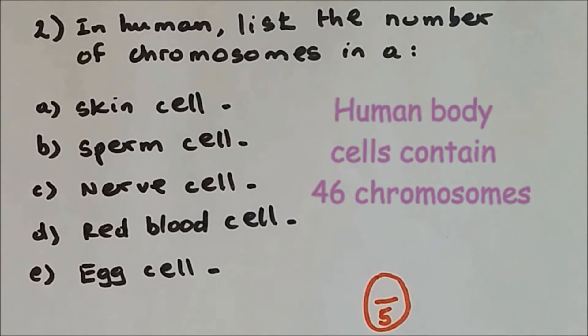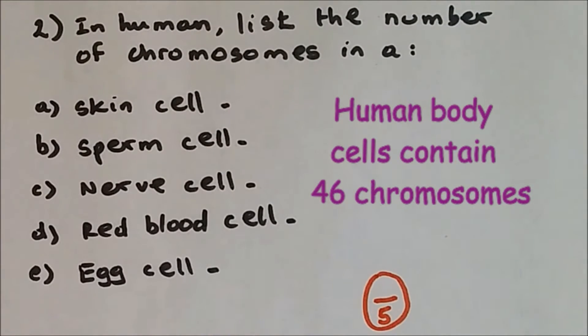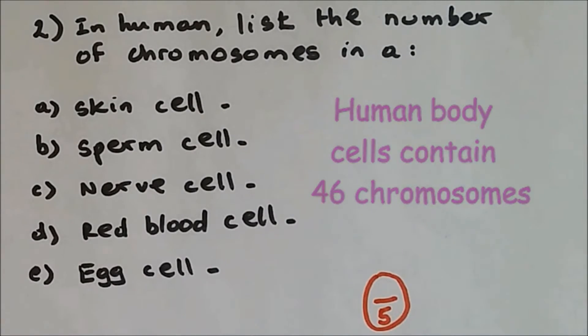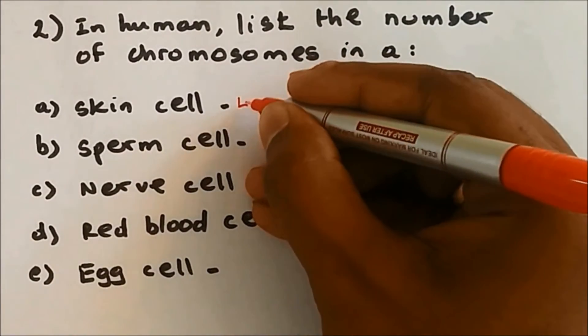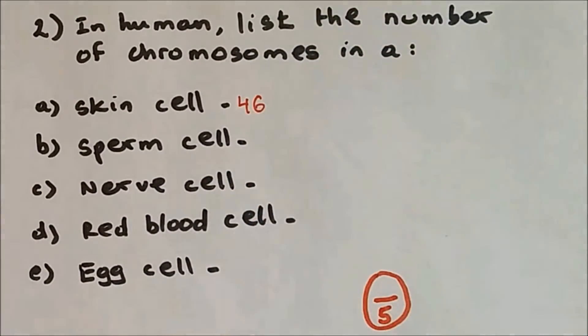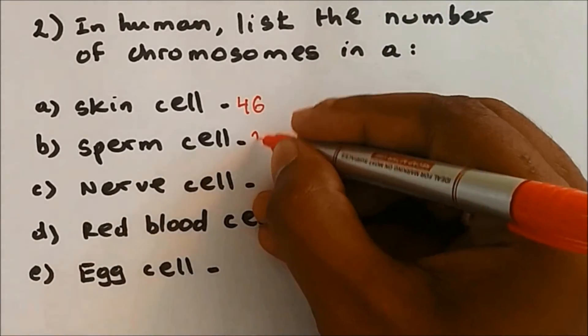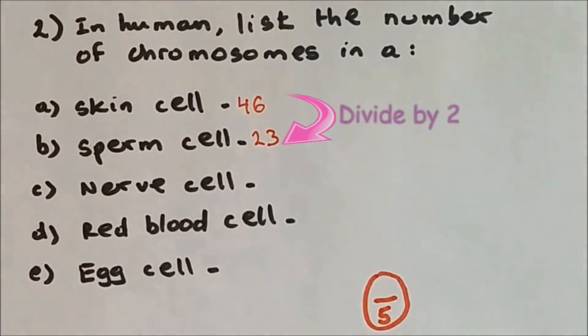Question number two: In humans, list the number of chromosomes. A human contains 46 chromosomes in every single body part except the gametes, which are sperm and egg cells. So a skin cell contains 46 chromosomes. A sperm cell is a sex cell or gamete and contains half the number of chromosomes, so it is 23.